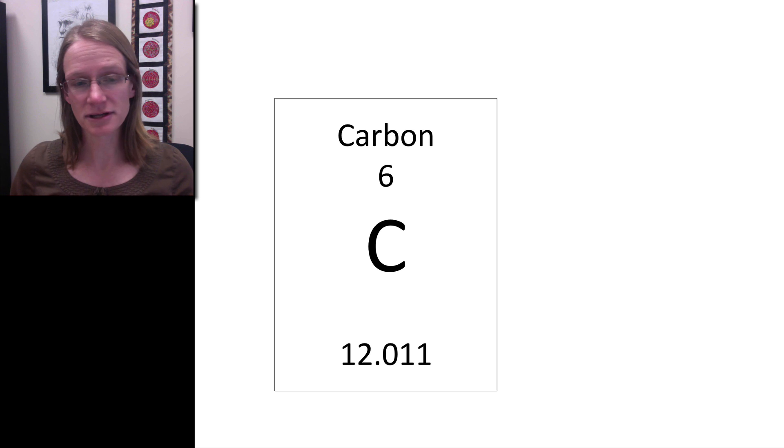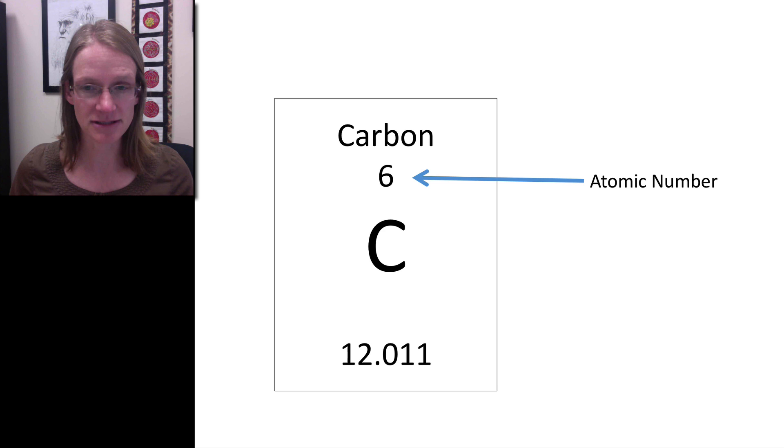Here you can see it. Most periodic tables will list the actual name of the element at the top, so you always have that available. Then there's information below it. That first number you see is the atomic number.